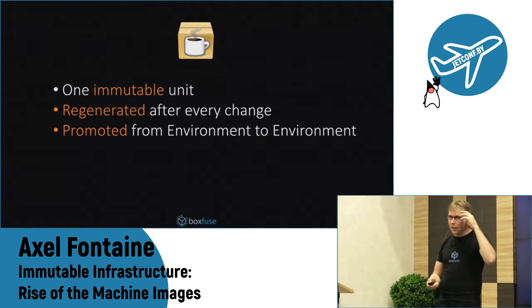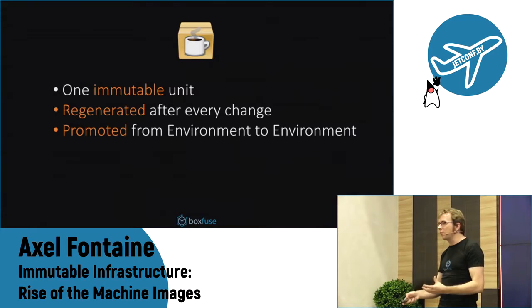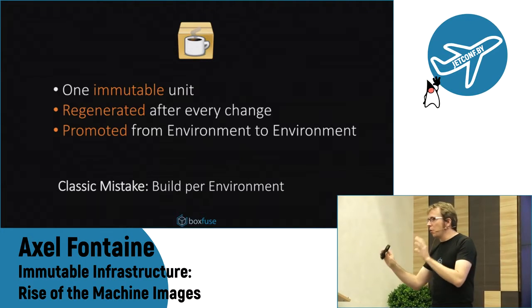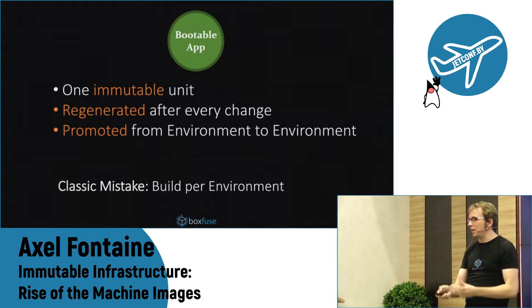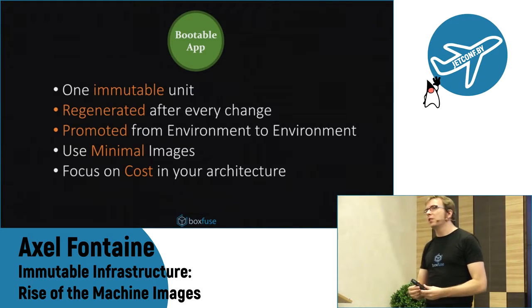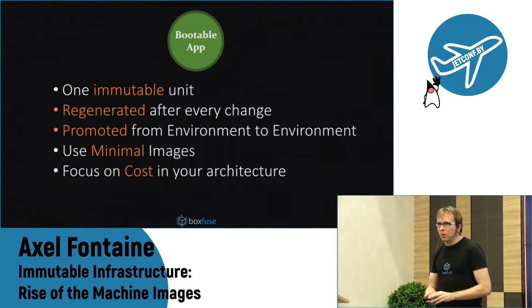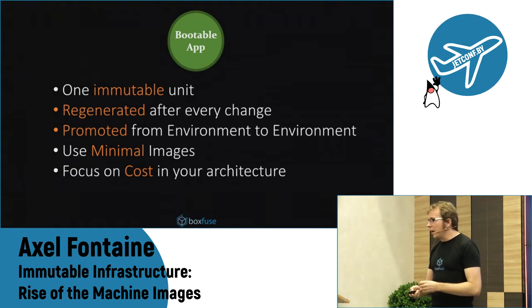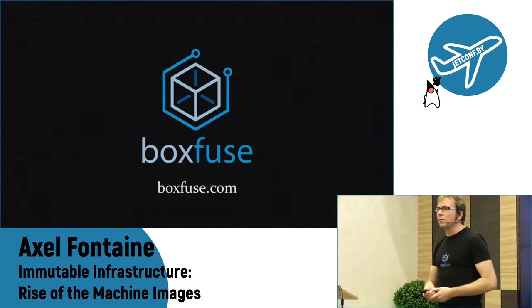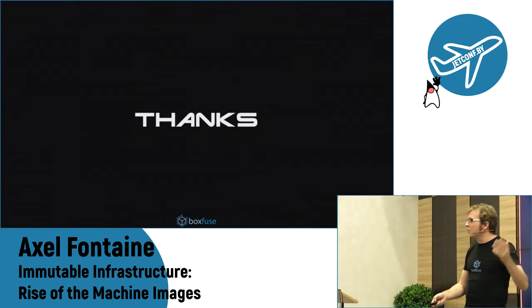To summarize: we've taken all the principles we've learned to appreciate for our artifacts — produce one immutable unit, regenerate after every change, promote unchanged from environment to environment to avoid having a different artifact in production than what was tested — and applied them to the remaining layers of our stack. To make it practical, go minimal with your images. A major driver in how we design our systems in the next few years will be cost — it's early days but it's a big one to watch. If what I talked about today resonated with you, feel free to run with it. If you're running on AWS with JVM, Node, or Go and found it interesting, I'd invite you to check out BoxFuse. Thank you very much.